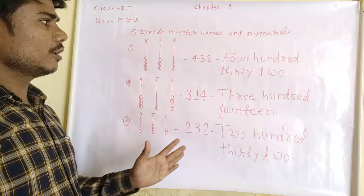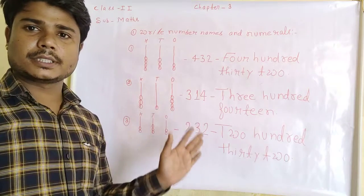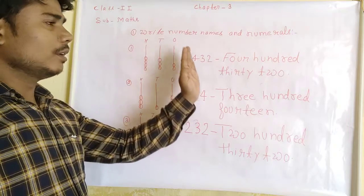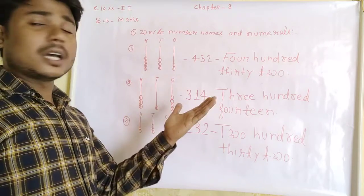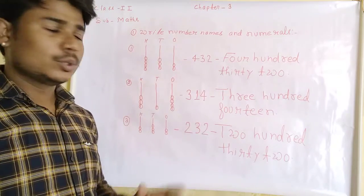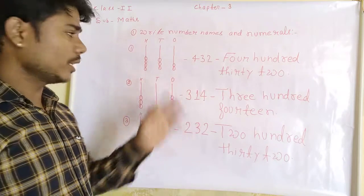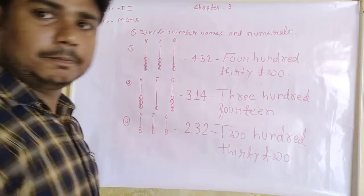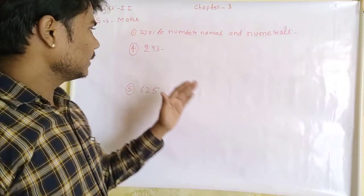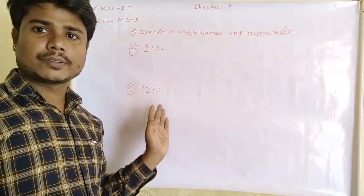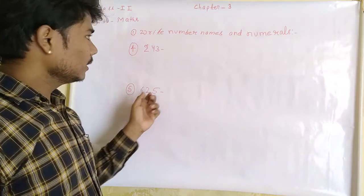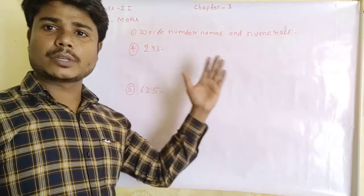So in this way we can represent the given number on an abacus, as well as write number names and numerals. Now I am going to write 2 more questions on the board. In questions 4 and 5, a number is given and you have to represent this number on the abacus, then write the number name.